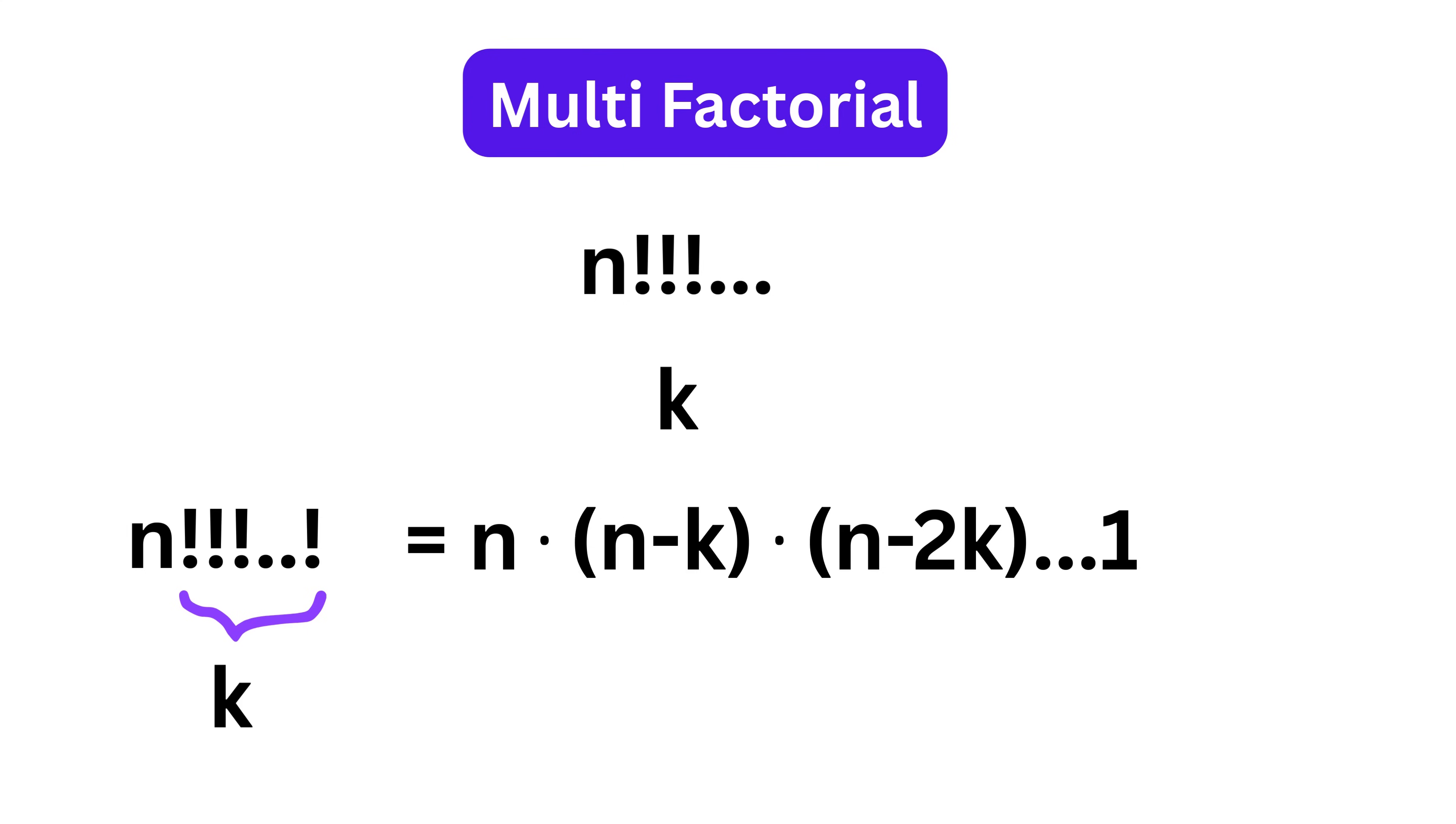For example, 7 multifactorial of order 3 would be 7 times 4 times 1.